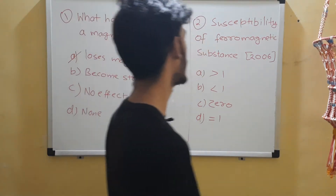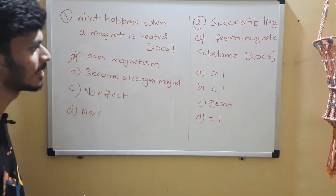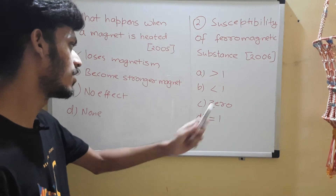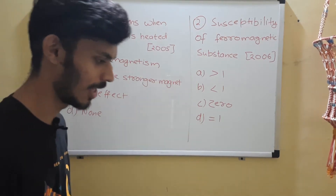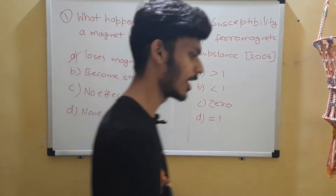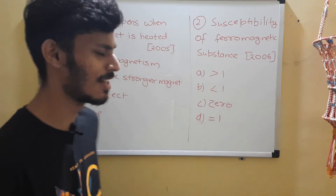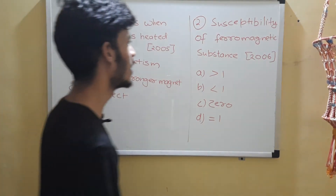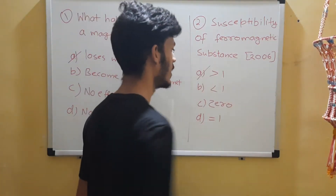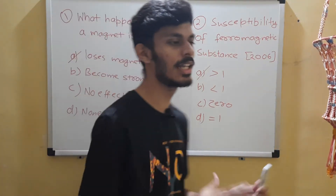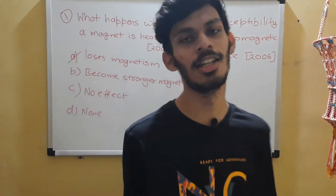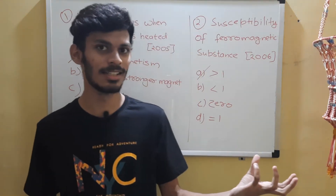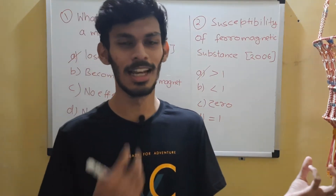Let's come to question 2. Susceptibility of a ferromagnetic substance is: greater than 1, less than 1, 0, or equal to 1? Another theoretical one — you should be ready with your answer. The correct choice is option A.